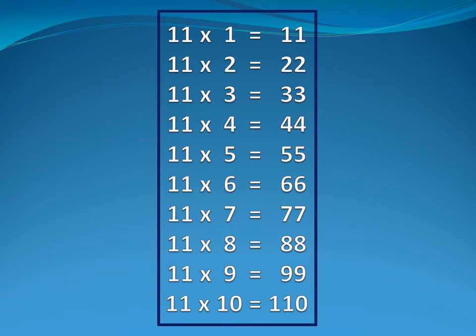Now eleven table. Eleven one is eleven. Eleven two is twenty-two. Eleven three is thirty-three. Eleven four is forty-four. Eleven five is fifty-five.